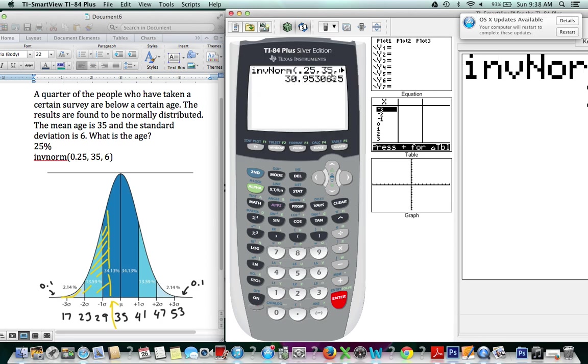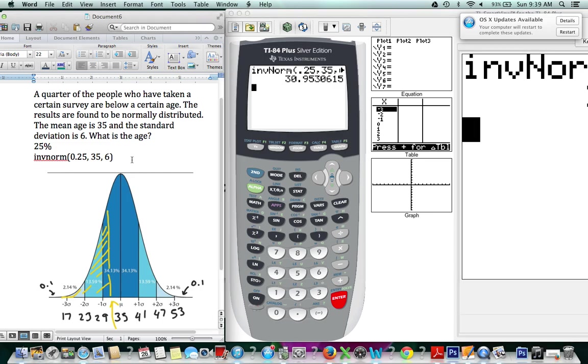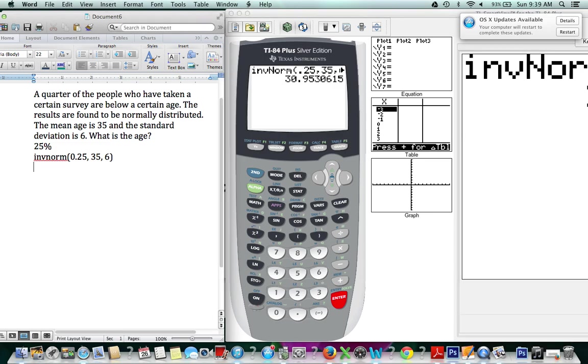And we have the age that is mentioned in this question. So, a quarter of the people who have taken a certain survey are below that age. That's the certain age that was referred to in this question.